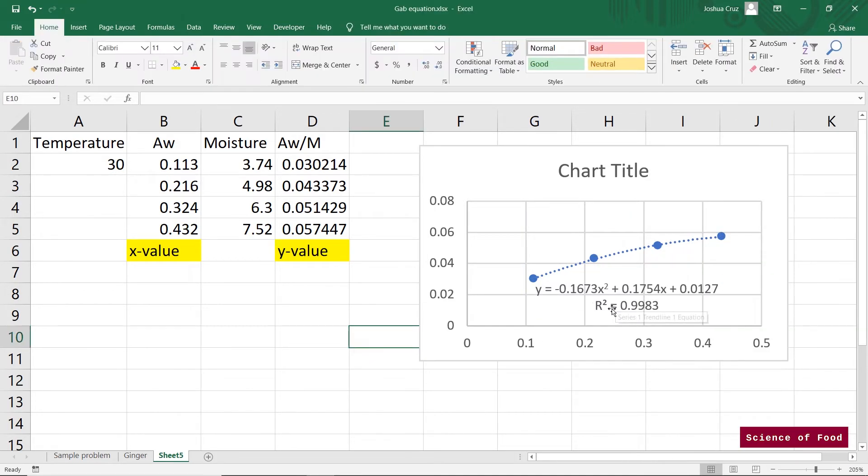I mean, the r squared is something that we look for to see the goodness of fit. Going back, we now have our a, b, and c values which is negative 0.1673, 0.1754, and 0.0127.